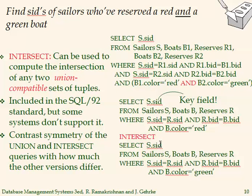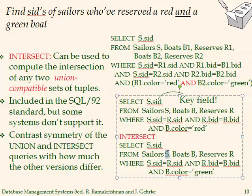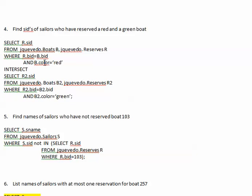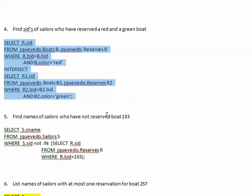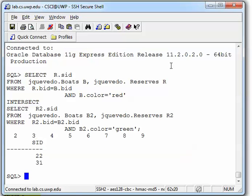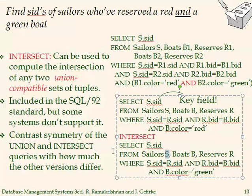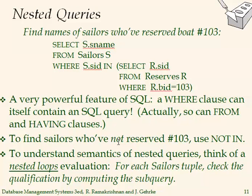I also noticed in the PowerPoint they're using the same alias 's' twice, which can cause a correlation problem. So in our implementation I used b2, r2 for one part and b, r for the other — just to make them different. I copy and paste that into my Oracle account using the jqbeto account and this is the result.